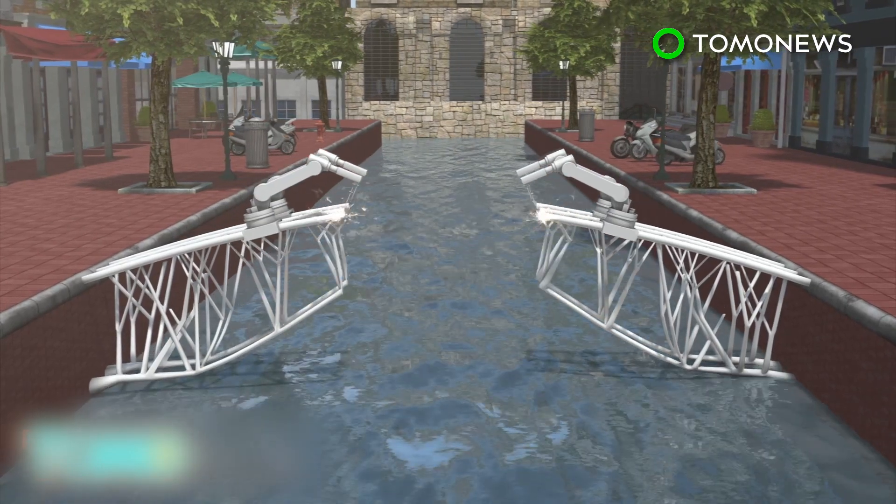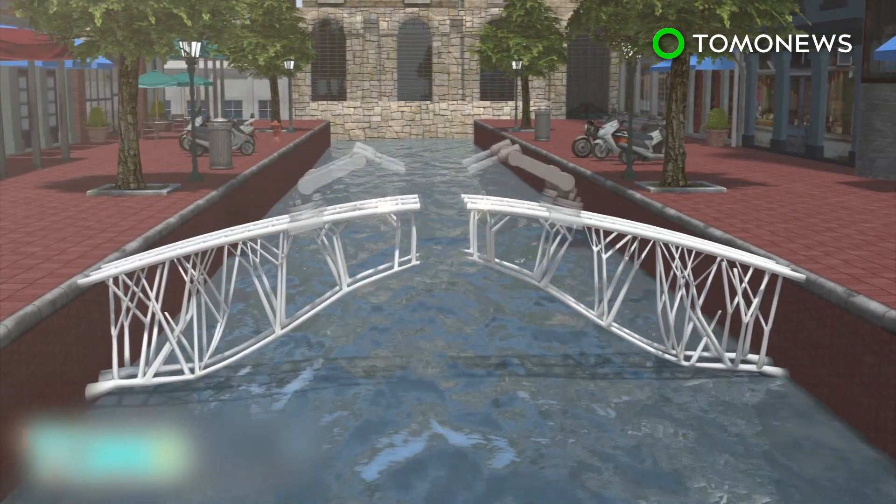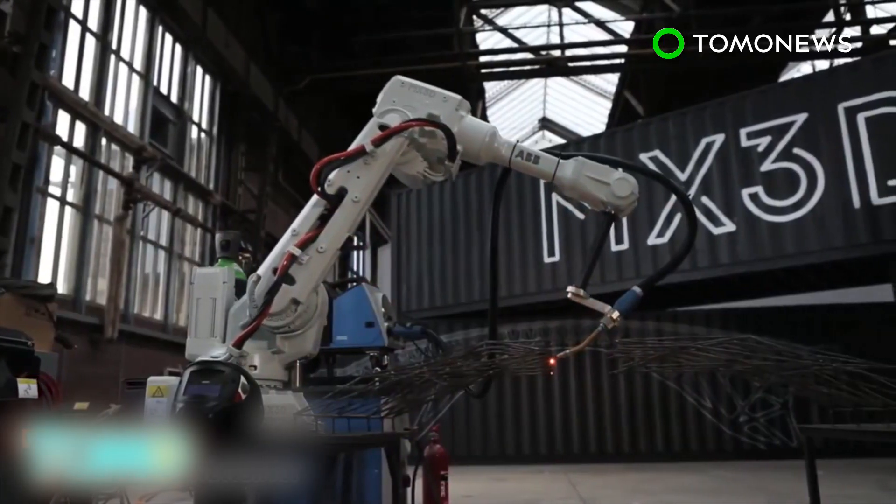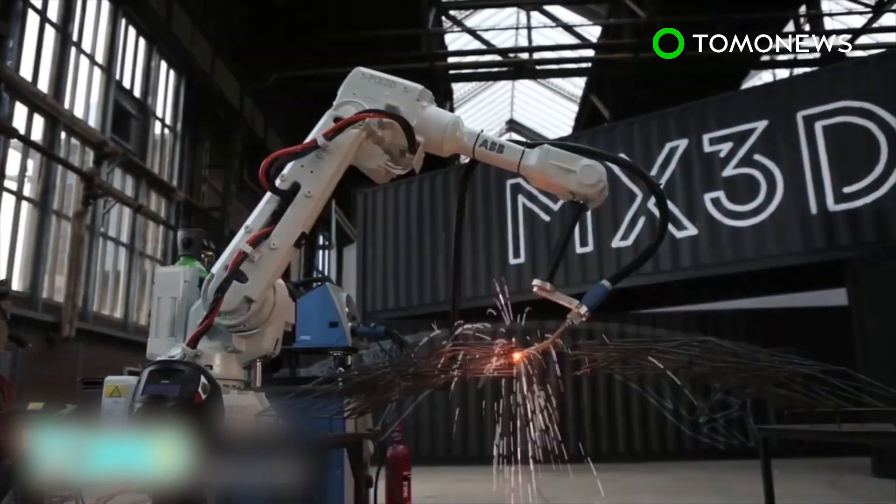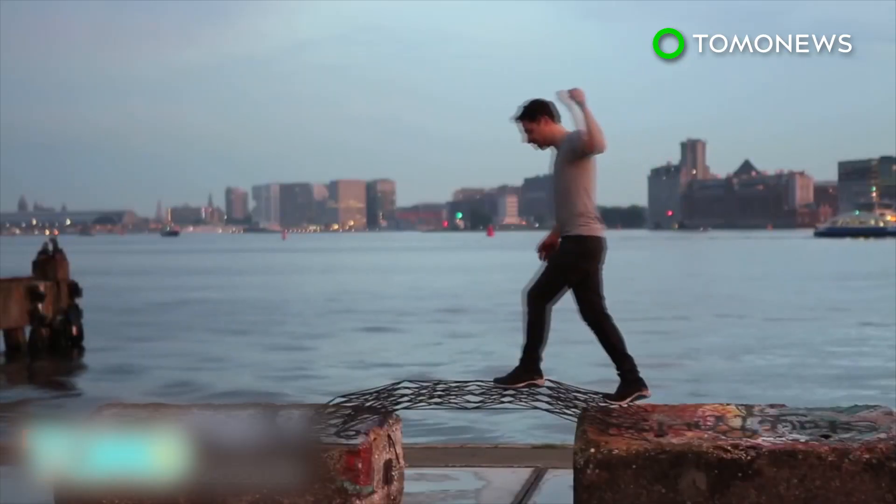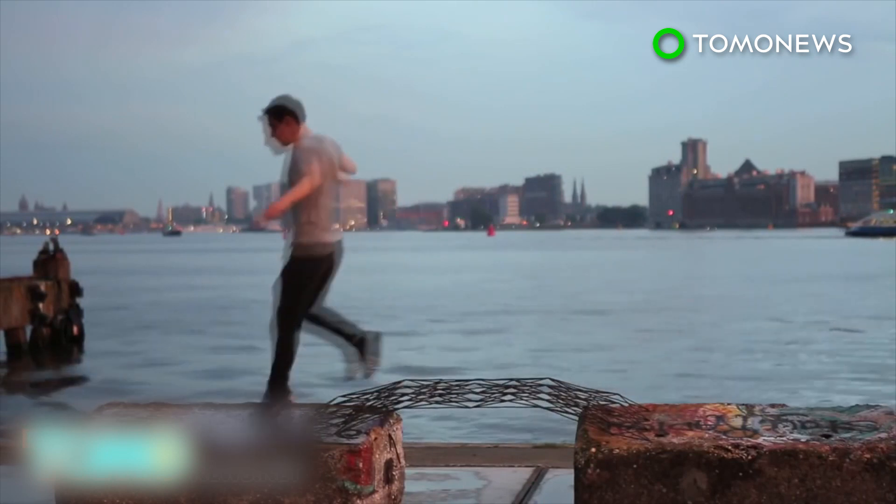This essentially means robotic arms will walk across the canal as a bridge is being created. According to the company, this technique could become standard on future construction projects, especially on high-rise structures that are more dangerous for human builders.